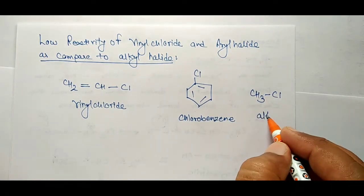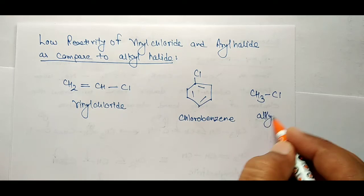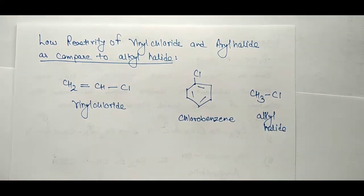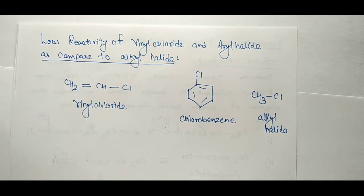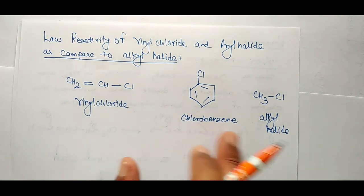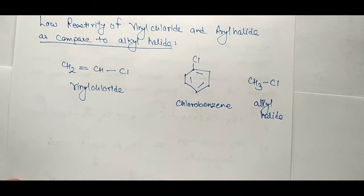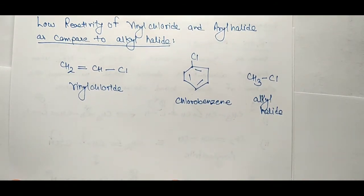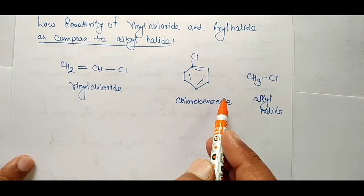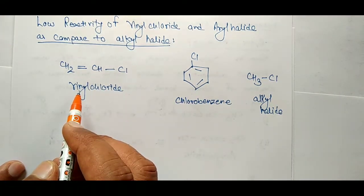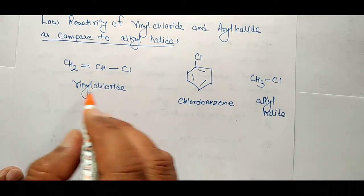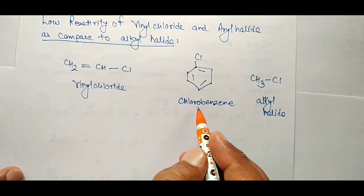And then the alkyl halide — if we talk about that, it is CH3 and Cl, this is called alkyl halide. Now we have to compare the reactivity of vinyl chloride and aryl halide with the alkyl halide. Now we will start explaining the lower activity of vinyl chloride and aryl halide.